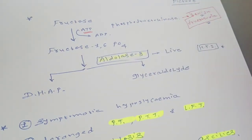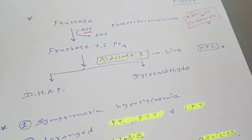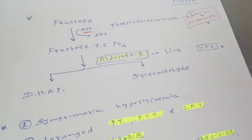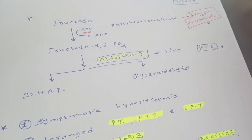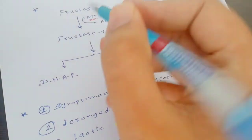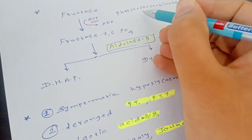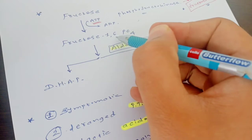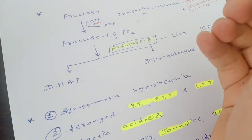In benign fructosuria, it is generally not a very harmful condition. The name is also given benign because only the thing which happens is the fructose is excreted in urine. The Benedict test, which is positive for reducing substances, is positive, and for more specific tests we are doing. In benign fructosuria, just the deficiency of the enzyme is phosphofructokinase, so the fructose-1,6-phosphate is not forming.